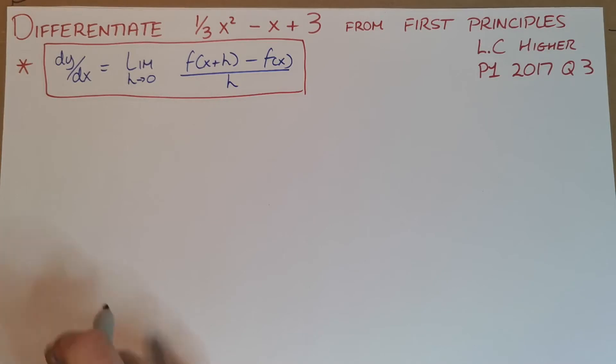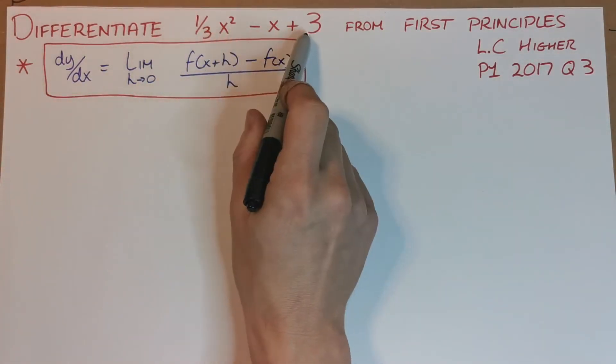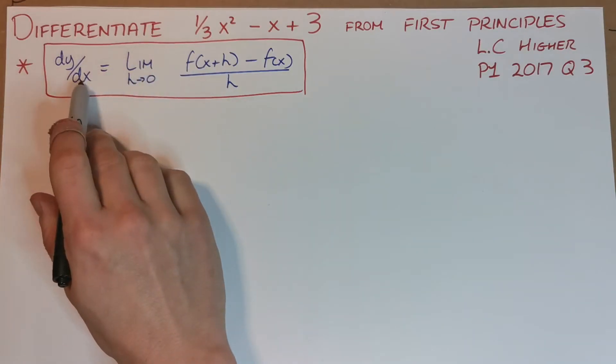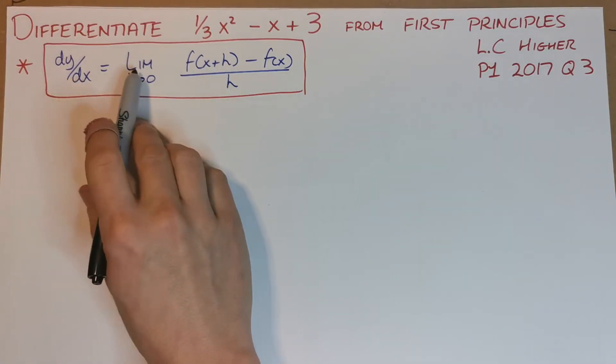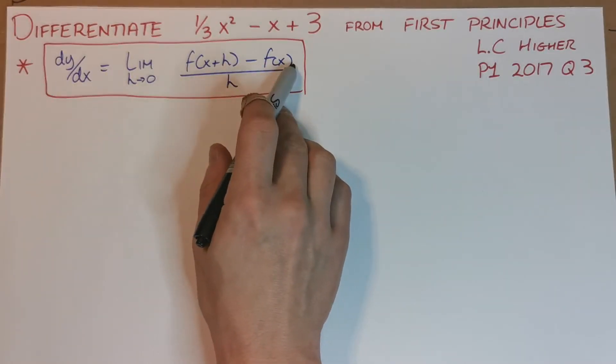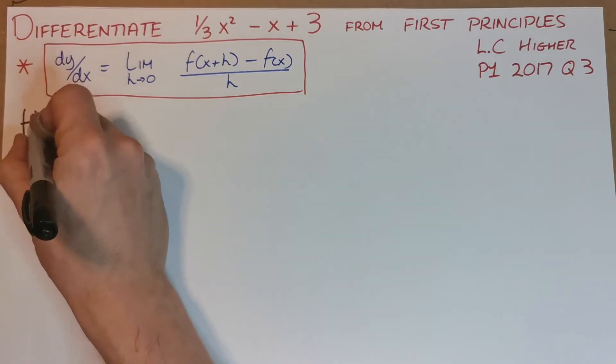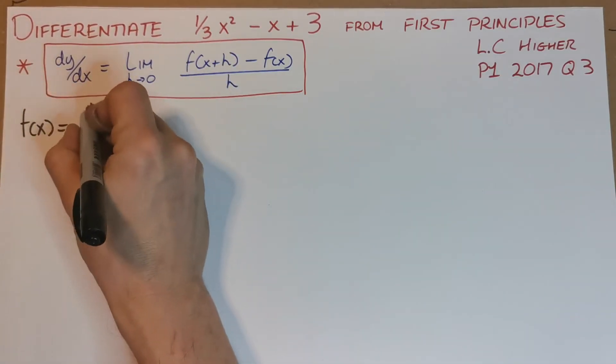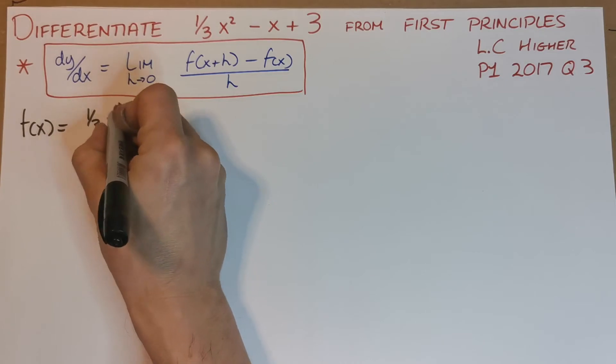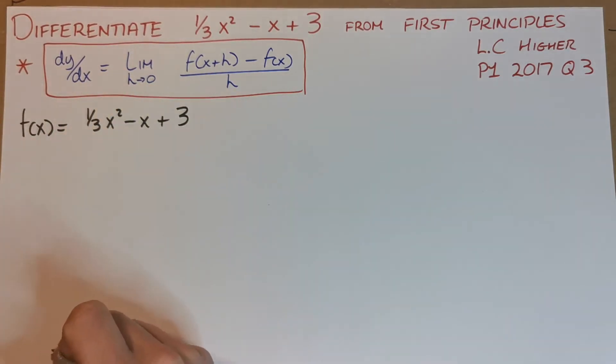First off, we're differentiating this function here from first principles. Let's remember our differentiation principle formula: dy/dx (the derivative) is equal to the limit as h goes to zero of [f(x+h) - f(x)]/h. f(x) is our function, so we can say straight away that f(x) is equal to (1/3)x² - x + 3. So what about f(x+h)?